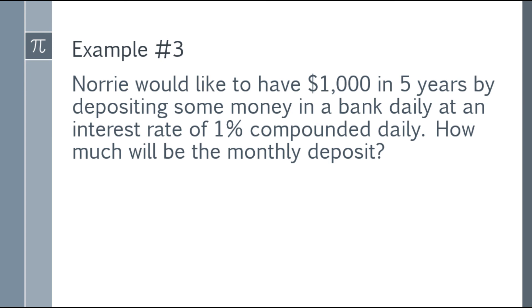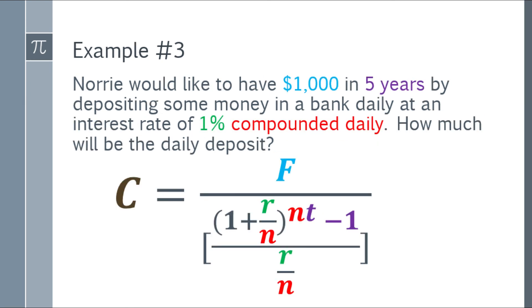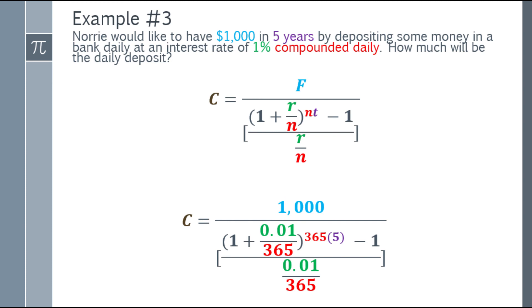Last example: Nori would like to have $1,000 in 5 years by depositing some money in the bank daily at an interest rate of 1% compounded daily. How much will be the daily deposit? First step, write the formula. Second step, substitute the values. Cash flow equals, in the numerator, $1,000. In the denominator, in the parentheses, 1 plus 0.01 over 365. That's 0.01 because it's 1%, and 365 because it's compounded daily. The exponent is m times t, 365 times 5 because it's 5 years. Subtract 1. The fraction at the bottom is 0.01 over 365.